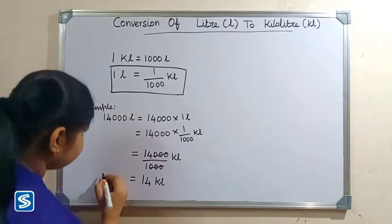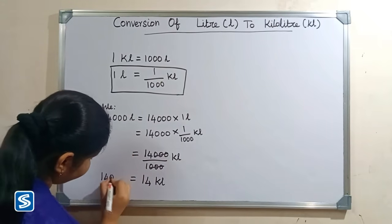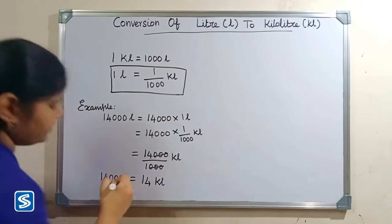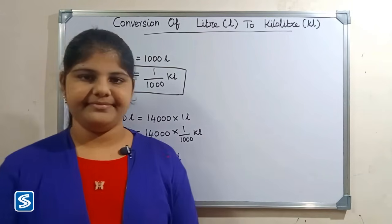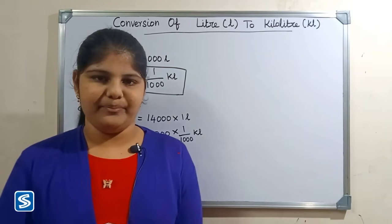When we divide fourteen thousand by one thousand kiloliters, our answer will be fourteen kiloliters. So fourteen thousand liters is equal to fourteen kiloliters.